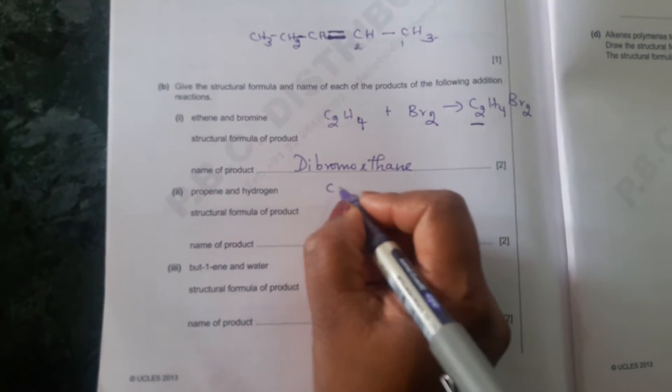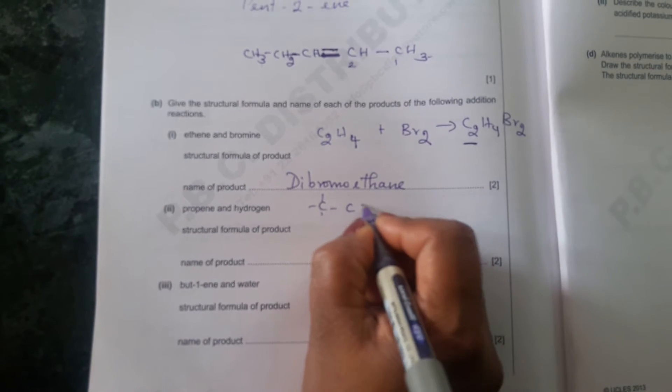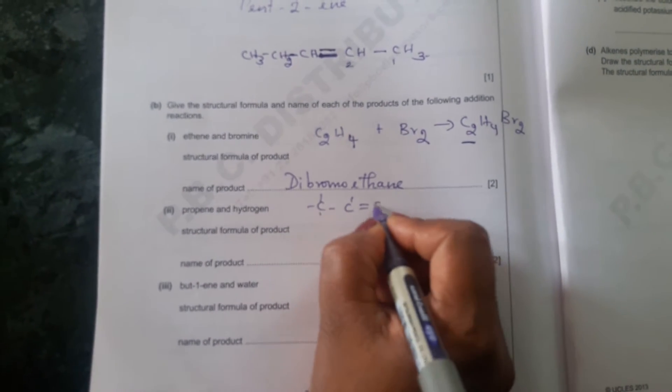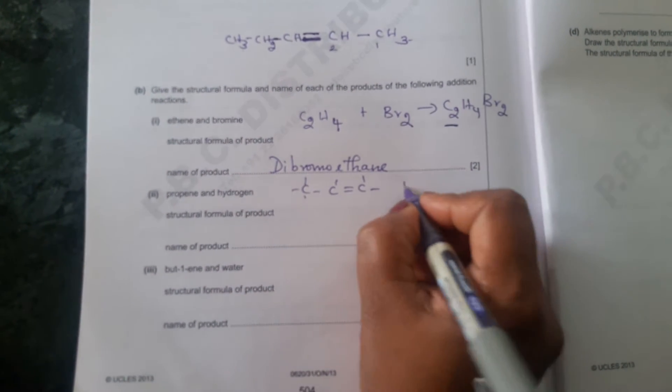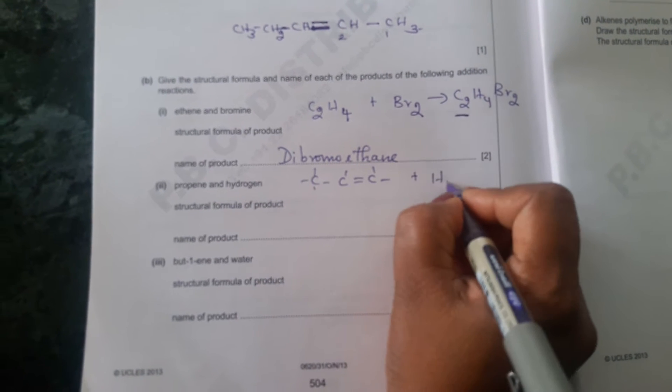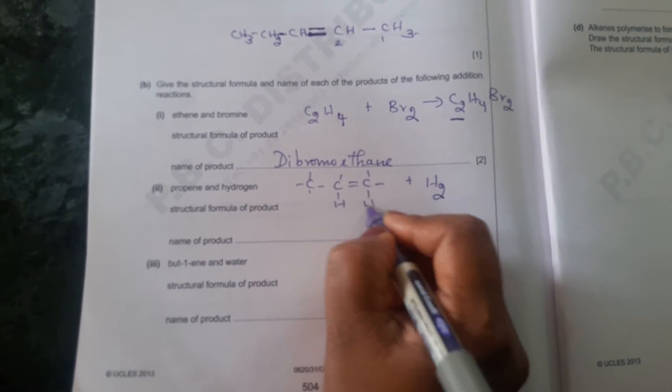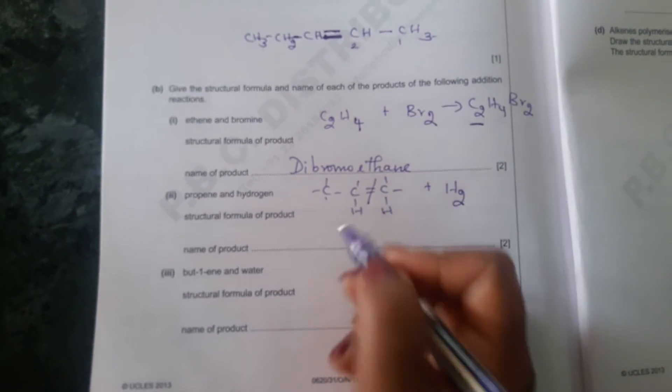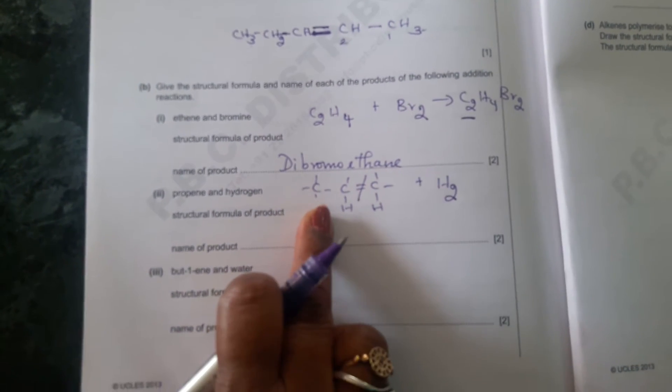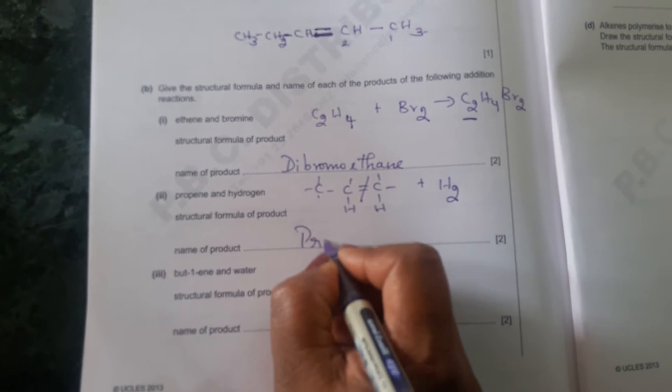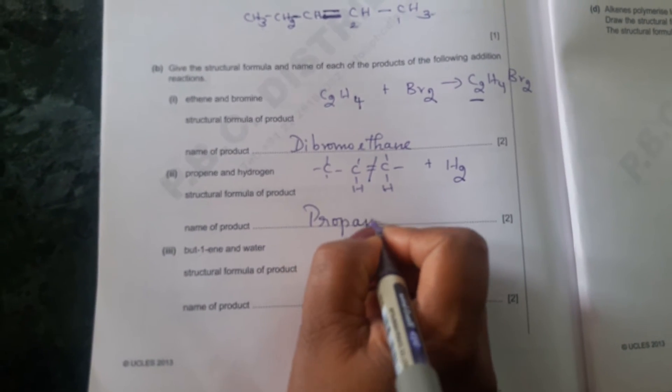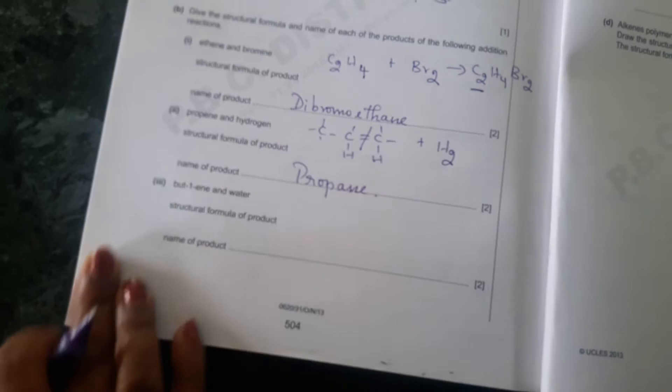And over here, propene with hydrogen. So propene is like double bond and like this. So when propene reacts with hydrogen, H2, one hydrogen will react over here and other will react over here. This breaks into single bond. So in that case, this becomes propane. Propene becomes propane. So product is propane.